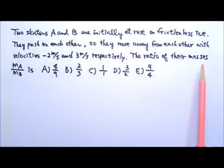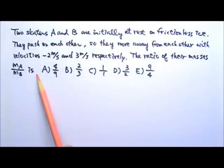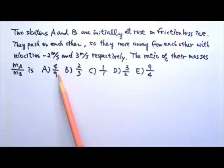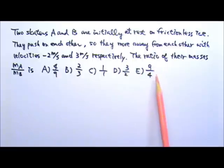The ratio of their masses MA over MB is: A, 4/9; B, 2/3; C, 1 to 1; D, 3/2; E, 9/4.